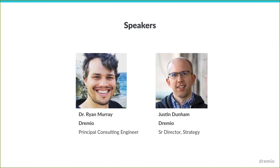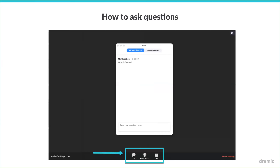I'm going to tell you quickly about how to ask questions on this webinar. There are a few buttons you'll see at the bottom of your Zoom window. The easiest and best way to make sure we see your question in a timely manner is to use that Q&A button. We will be answering questions at the end of the webinar, but feel free to ask as we go along.